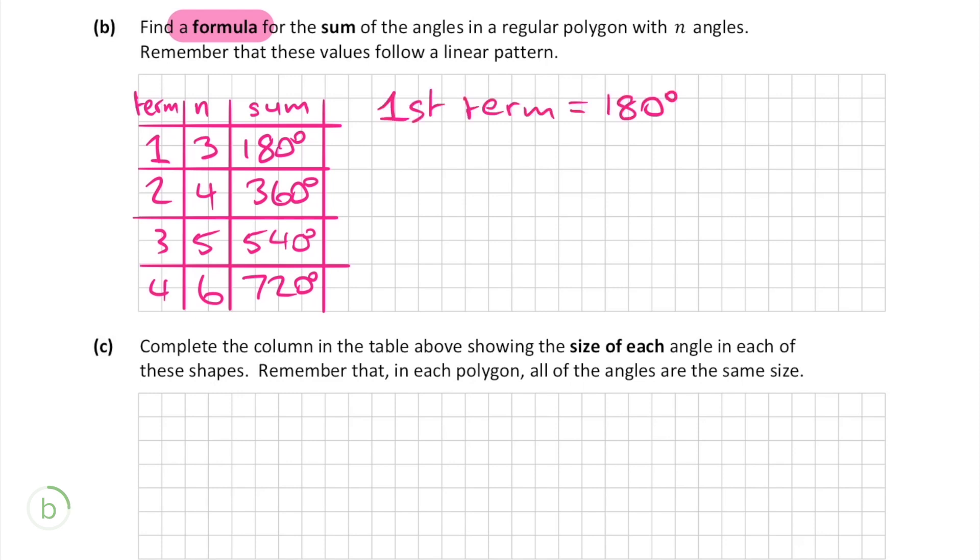We know that the first term gives us a sum of 180 degrees and the polygon that gives us this sum has three angles. So to get from 3 to 180 we must first take 2 from the 3 to give us the first term and then multiply this by 180 to give us 180 degrees.